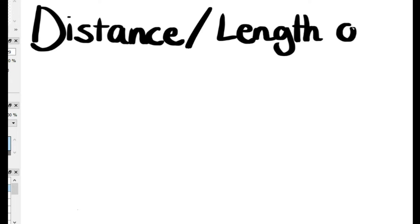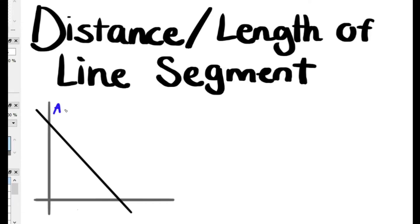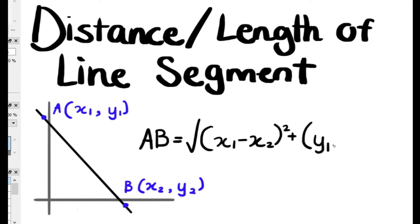Now this is the distance or the length of a line segment. For this line we have a formula which is the square root of x1 minus x2 squared plus y1 minus y2 squared, all under one big square root.